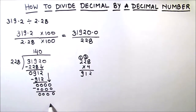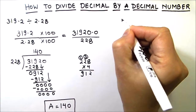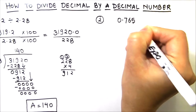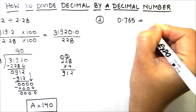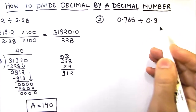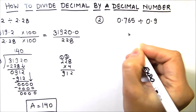Our final answer is 140. Let's solve one more example and divide 0.765 by 0.9. The first step here too will be to remove the decimal point from the divisor.